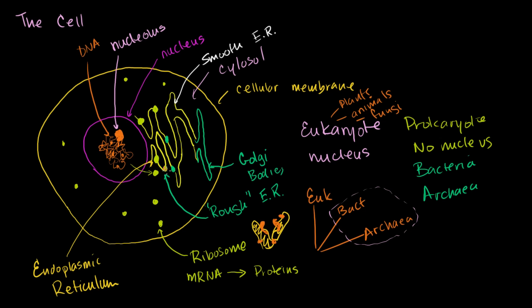What happens is: your mRNA gets translated on the outside of the endoplasmic reticulum. But as the protein gets produced, it's getting pushed into the inside of the endoplasmic reticulum—the lumen. The proteins to be used outside of the cytosol, or in the cell's membrane, will end up inside the ER. That's why those ribosomes are on the membrane.